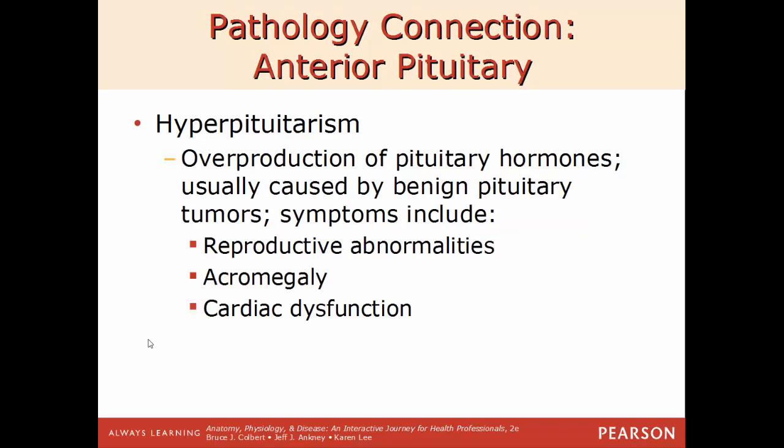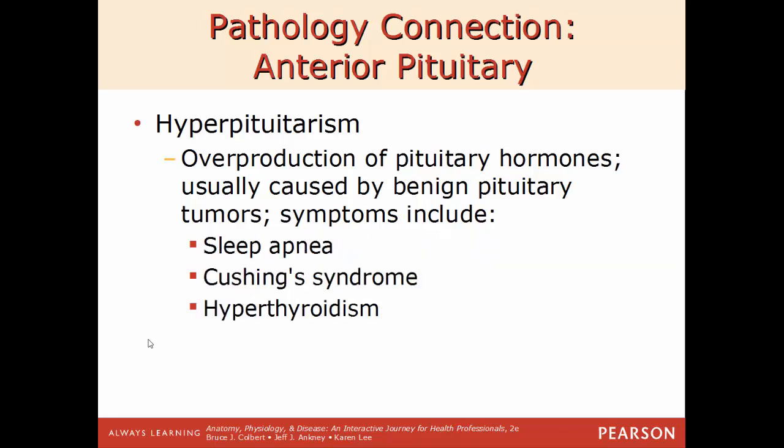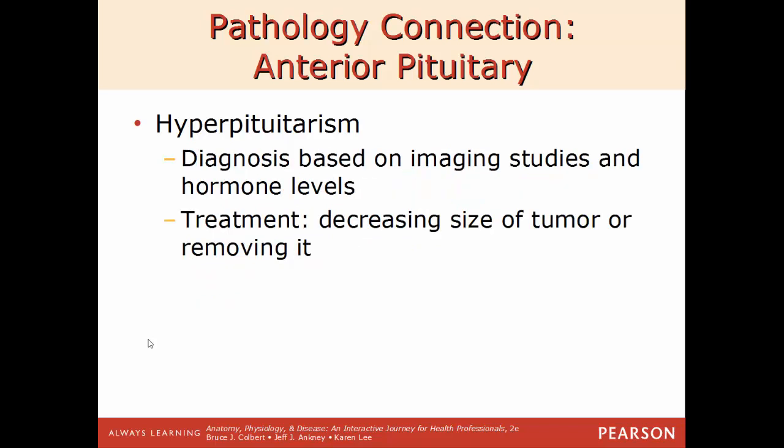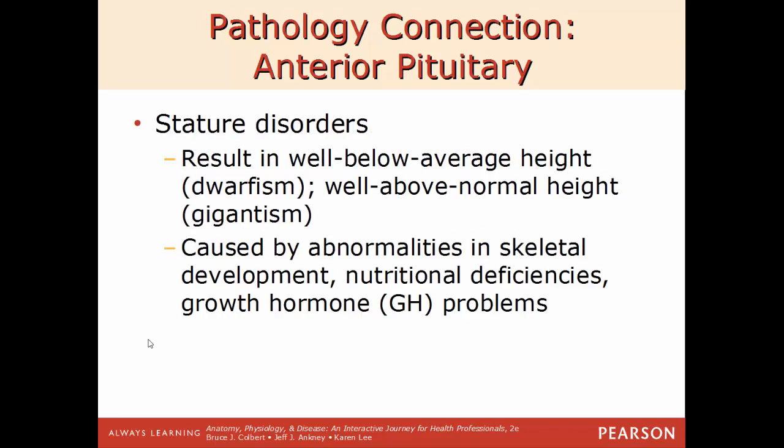The opposite condition, hyperpituitarism, is the overproduction of pituitary hormones, usually caused by benign tumors. This can cause acromegaly, cardiac dysfunction, reproductive abnormalities, hyperthyroidism, Cushing's syndrome, and sleep apnea. Diagnosis uses imaging studies and checking hormone levels, and treatment involves decreasing the size of the tumor or surgically removing it.